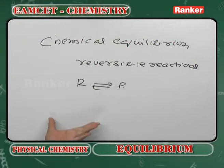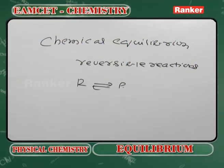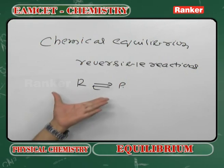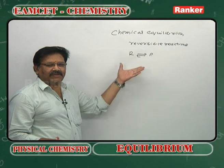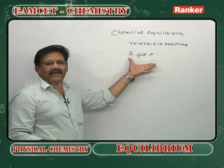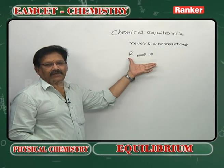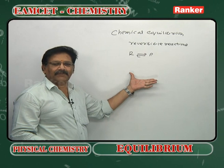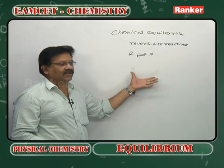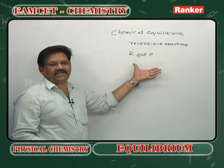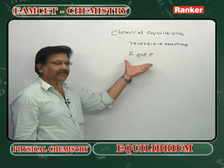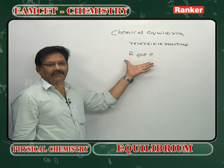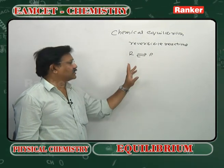The important theoretical aspects regarding chemical equilibrium include: characters of equilibrium, characters of the equilibrium constant, the relation between Kc and Kp, and units of the equilibrium constant.